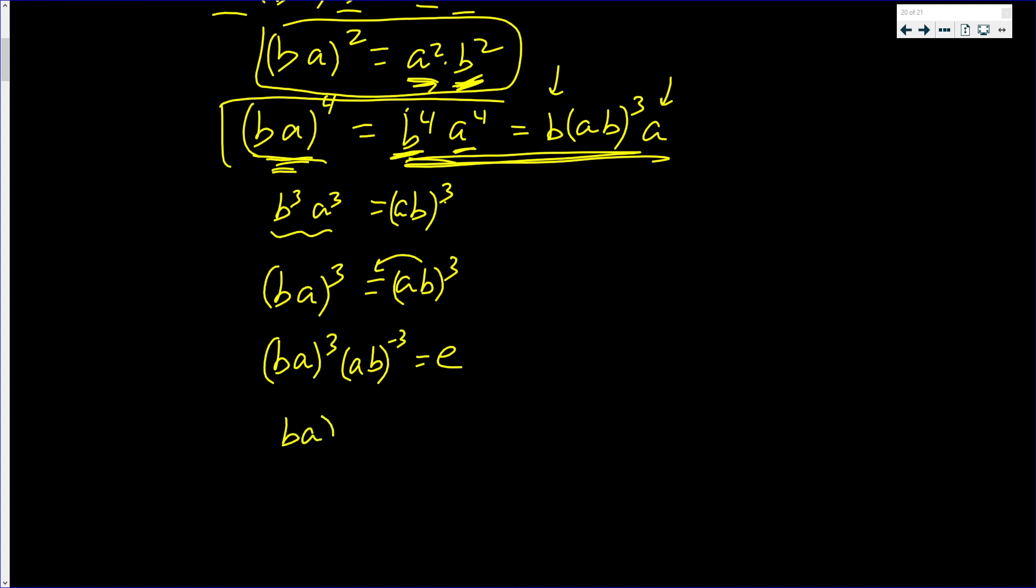But this is the same as (ab)³ times (ab⁻¹)³, which is e. But that's the same as ba(ab⁻¹), all cubed,